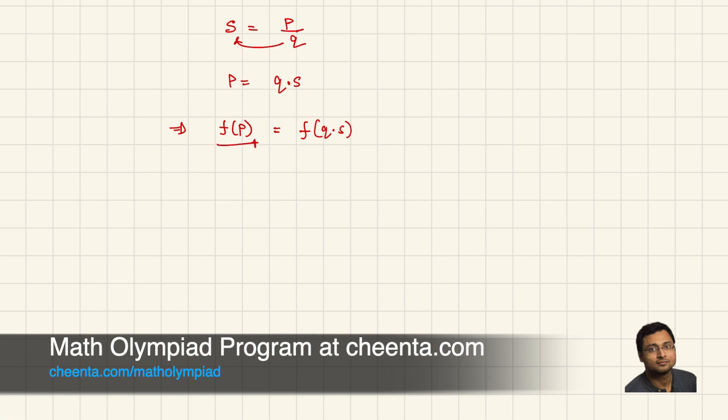All right. Now, this part we know. We know. Why? Because P is an integer. So, we know that f(P) must be some constant, whatever that constant is, times P. This constant is f(1). That's what we found in stage 1. Remember?